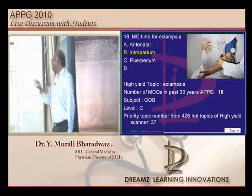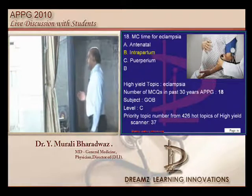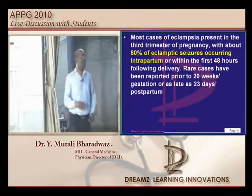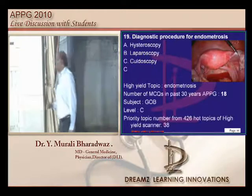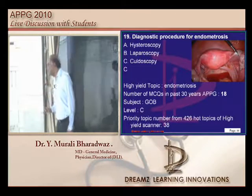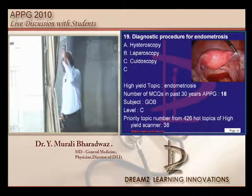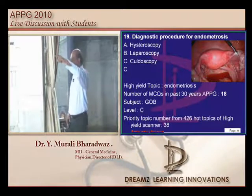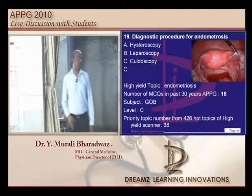What is the most common timing of eclamptic seizures? They are basically intrapartum — 80% of eclamptic seizures are intrapartum, and this needs to be remembered. For endometriosis, how do you evaluate? Laparoscopy will show classical appearances such as the powder-burn appearance of the utero-sacral ligaments and chocolate cysts. We are ready to attack any question on endometriosis.